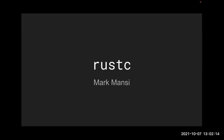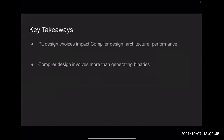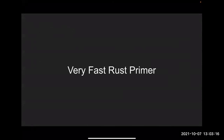Thanks for that intro. Please interrupt me if something is not clear. I'll talk about a few things: first, a quick primer on Rust so we have a sense of what kind of language we're trying to compile; then how rustc is built at a high level; and then other considerations that go beyond just generating binaries. Two key takeaways: compiler design and performance are heavily influenced by the language being compiled, and compiler design involves much more than just generating binaries.